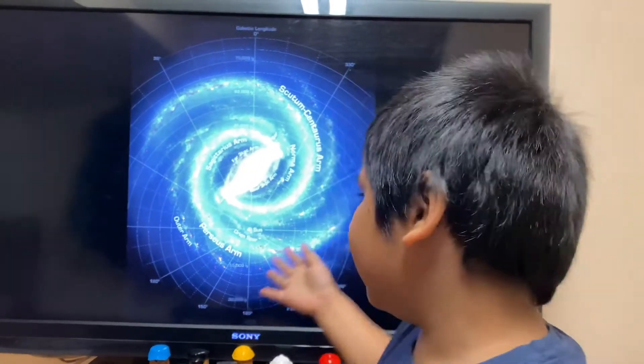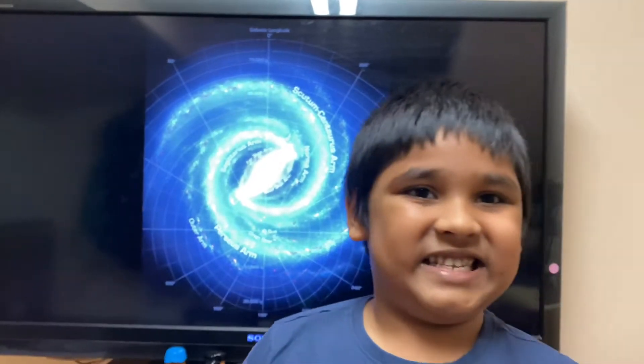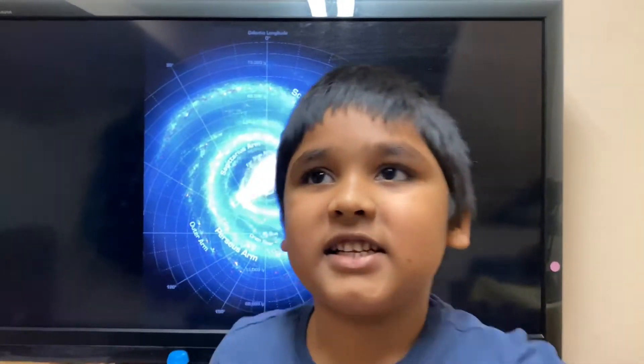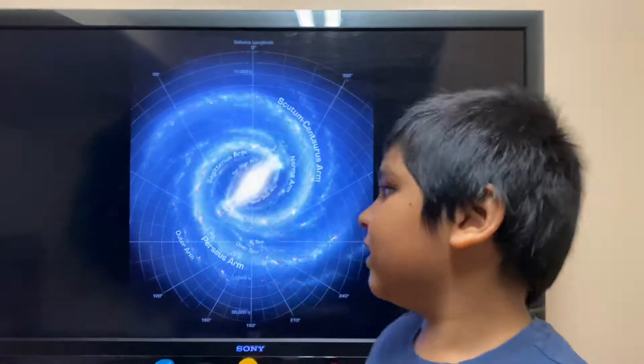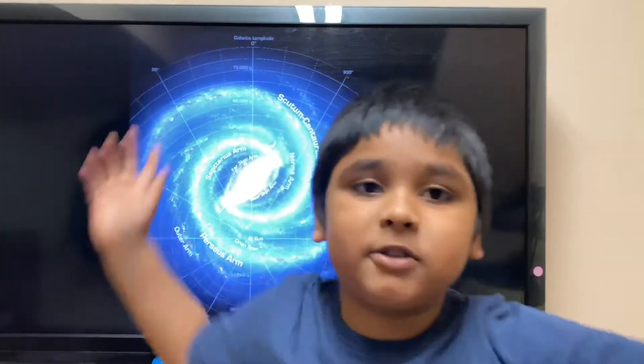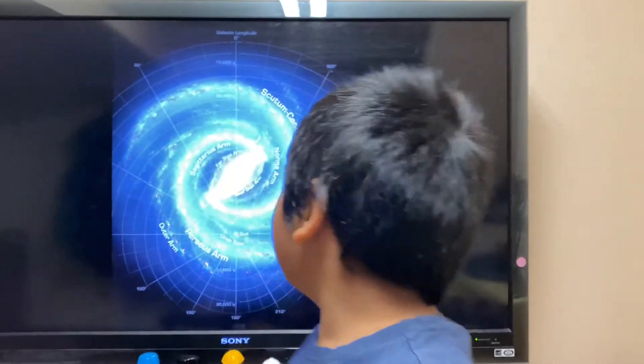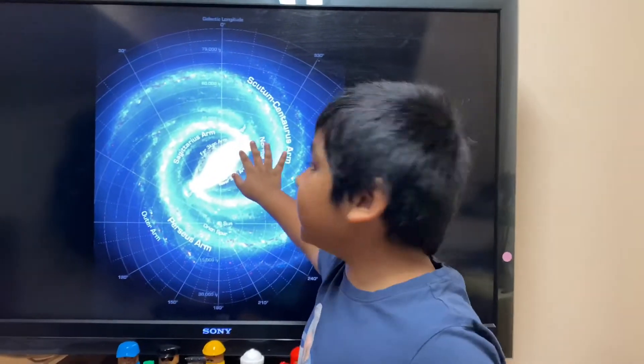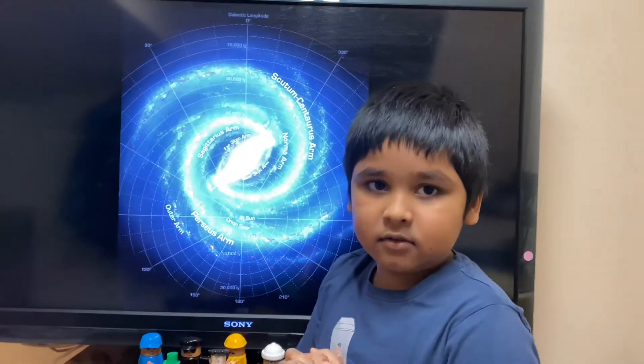But what is a galaxy? A galaxy is filled up with stars, dust, rocks, and planets. So those are the things that create a galaxy.